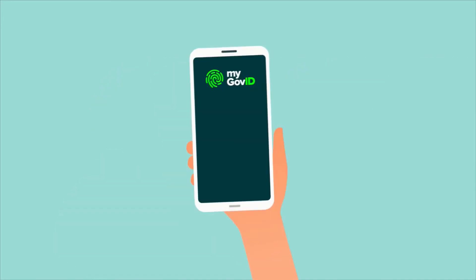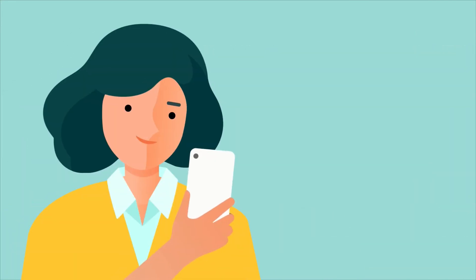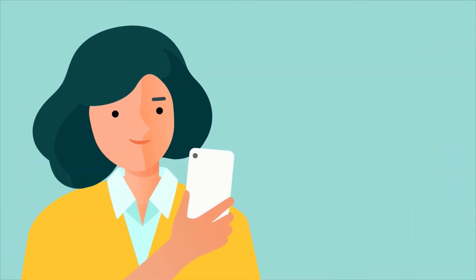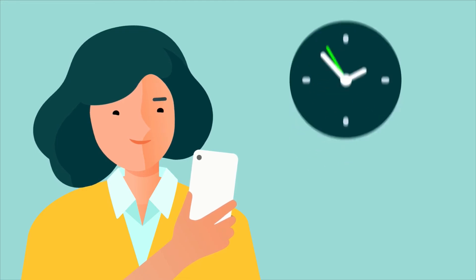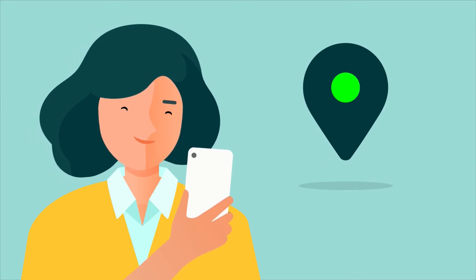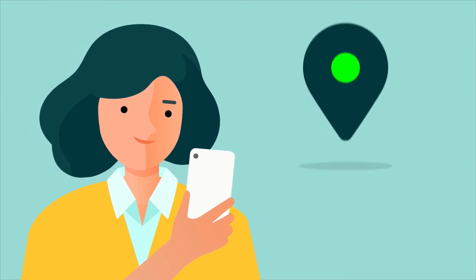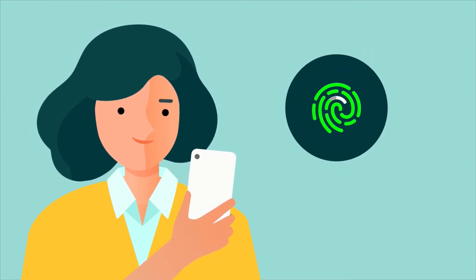It's like the 100 point ID check for your smart device. And because it's on your smart device, you can use it when and where you want. To further protect your information, the MyGovID app uses the security features already built into your device to recognize your fingerprint or your face.